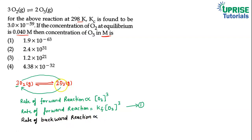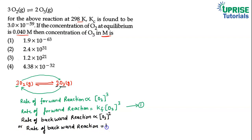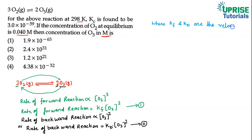The second equation is for the rate of backward reaction. The rate of backward reaction will be directly proportional to the concentration of O₃. Since O₃ has a coefficient of 2, the power on its concentration will be 2. So: rate of backward reaction = kb × [O₃]². We will call this Equation 2.